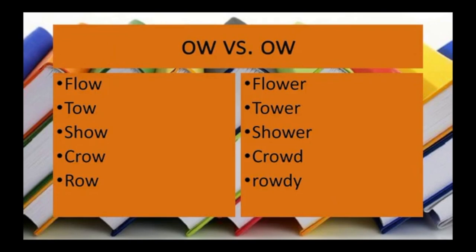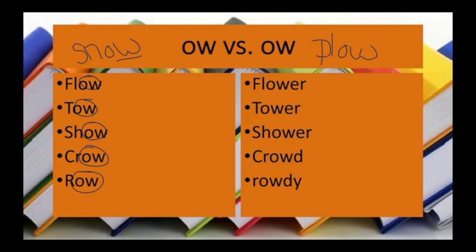Let's take a little time to discuss the difference between OW like snow and OW like plow. The OW like snow usually only comes at the end of the word — like flow, toe, show, crow, row. While OW can also come at the end, OW is special because it can also come in other parts of words.